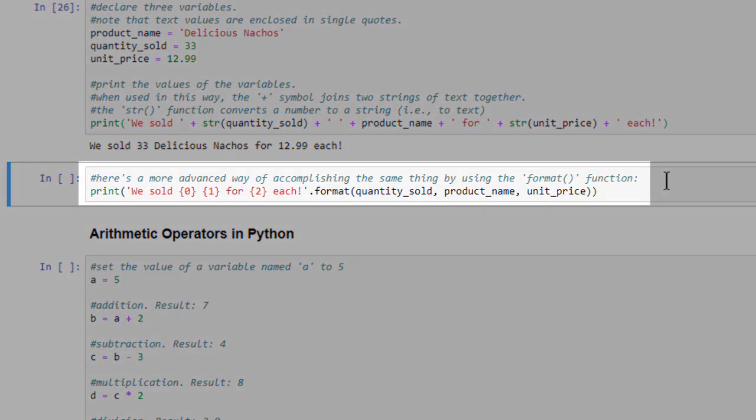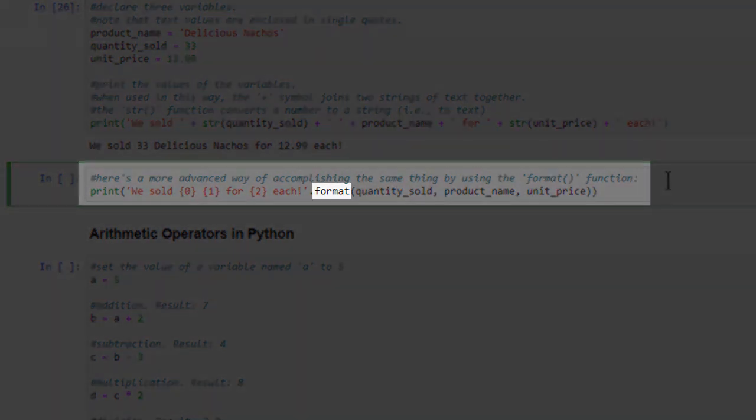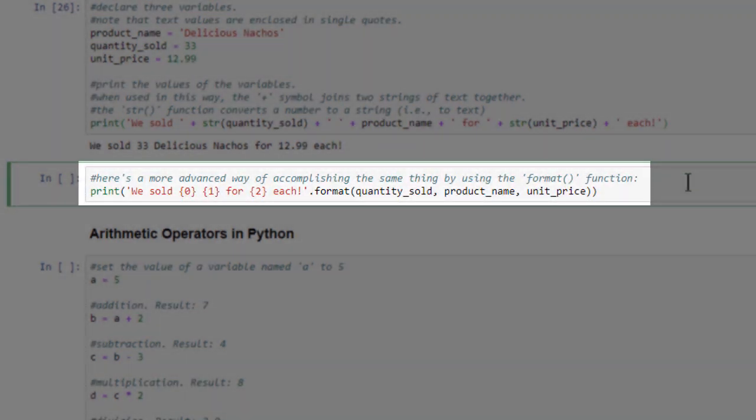In this next code cell, we'll use a more advanced way of accomplishing the same thing, by using the Format function. Instead of doing all of the string concatenation ourselves, we simply type the output text in the way that we want it to appear, except that we use numbers inside curly braces as placeholders for the values that we want to appear. These numbers refer to the ordinal positions of the variables that we pass into the Format function. Zero, for example, refers to the first variable in the list, which in this case is the quantity sold.